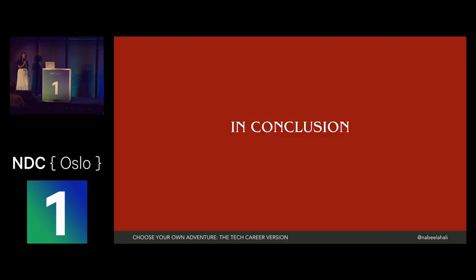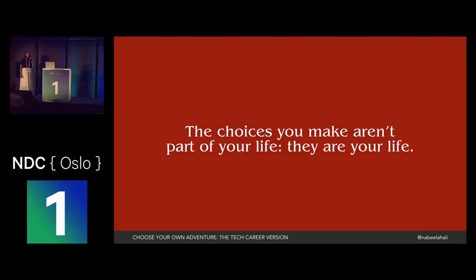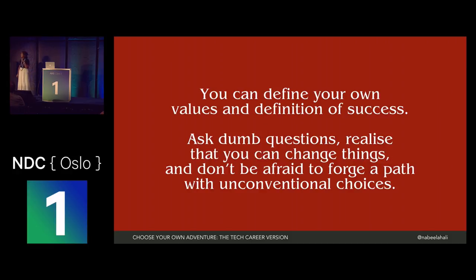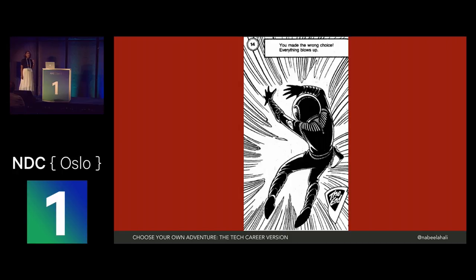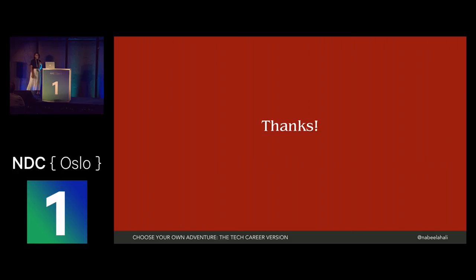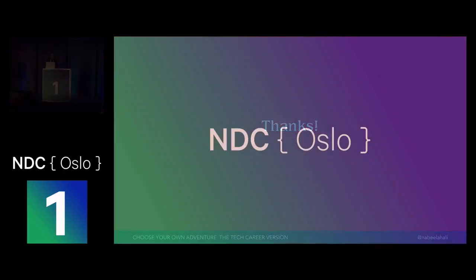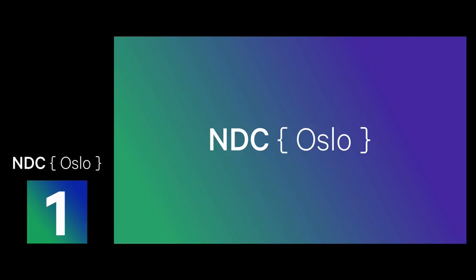In conclusion, if there's one thing I want you to take away from this talk, it's this: the choices that you make aren't part of your life — they are your life. You can define your own values and definition of success. You should ask the dumb questions. Realize that you can change things. And don't be afraid to forge paths with unconventional choices. Because, unlike the Choose Your Own Adventure book series, if you make a choice and it turns out not to be the right one, it rarely ends badly. Thank you so much for attending — I will be here and at the conference until Friday. Don't be afraid to introduce yourself to the person next to you.